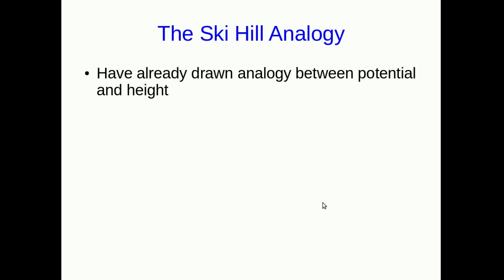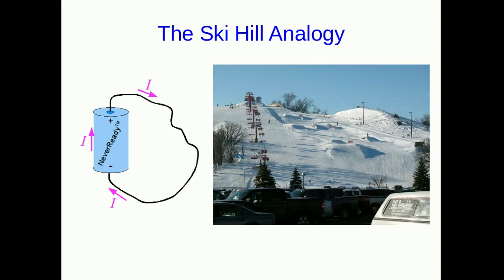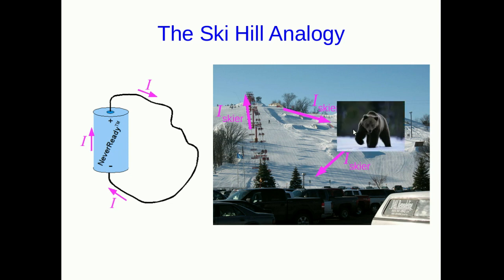I've already made this analogy of potential to height a fair number of times. For example, when we were comparing contour lines on a topographic map with equipotential curves. Hills can be thought of as corresponding to voltages in this analogy. Since we're beginning to talk about circuits, how can we have a circuit on a hill? Well, one way is a ski hill. On a ski hill, your skiers go up on the lift and back down and they hop back on the lift and so they're going around and around just like in a circuit.